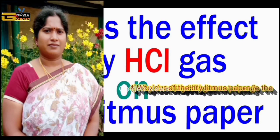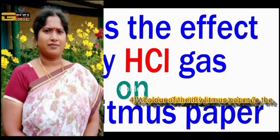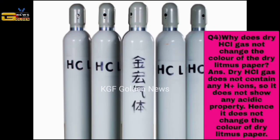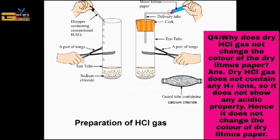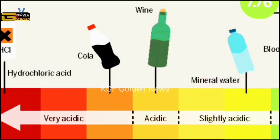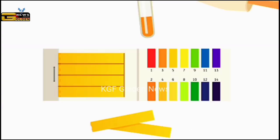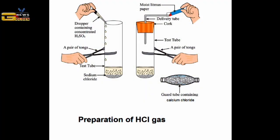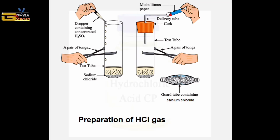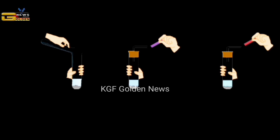An important question. Question number four: why does dry HCl gas not change the color of the dry litmus paper? The answer is, dry HCl gas does not contain any H+ ions, so it does not show any acidic property. Hence, it does not change the color of dry litmus paper. In dry HCl, there are no H+ ions because there is no moisture or water molecules for hydrochloric acid to dissociate into H+ and Cl- ions. Therefore, H+ ions are not available to change the color of the litmus paper.